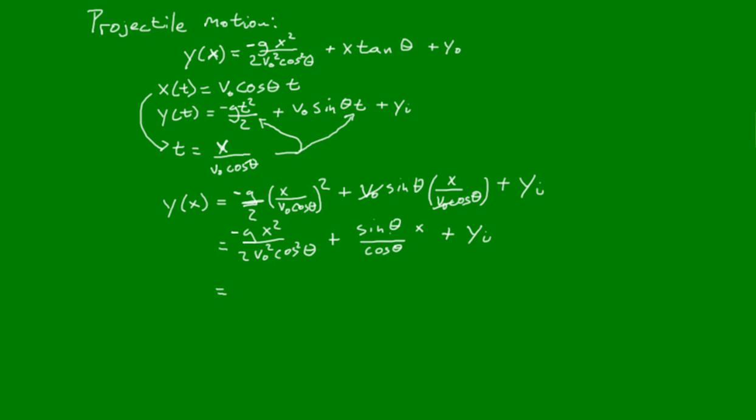Now we can simplify a little bit further and just take this whole term, the sine theta over cosine theta. And if we remember that sine theta over cosine theta equals tangent of theta, we can rewrite this as negative gx squared over 2 v naught squared cosine squared theta plus x times tangent of theta plus the initial y position.